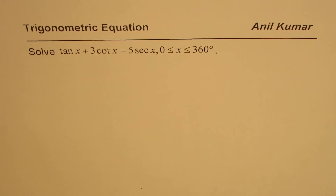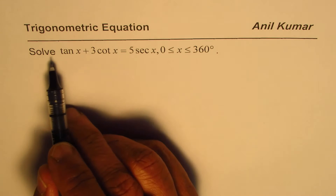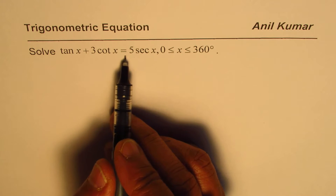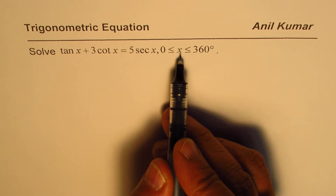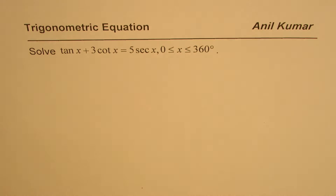I'm Anil Kumar sharing with you a test question on trigonometric equations. The question is: solve tan x plus 3 cot x equals 5 sec x, where x is between 0 and 360 degrees, both included.